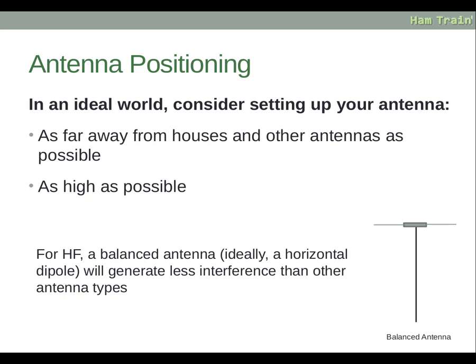For antenna positioning, in an ideal world, set up your antenna as far away from houses and other antennas as possible, and as high as possible. For HF, a balanced antenna — ideally a horizontal dipole — will generate far less interference than other types, and generally with this setup you won't cause any interference at all. Most people don't have a huge field as a back garden, so as far and as high as your particular location allows might be a compromise — but do the best you can with the space you've got.